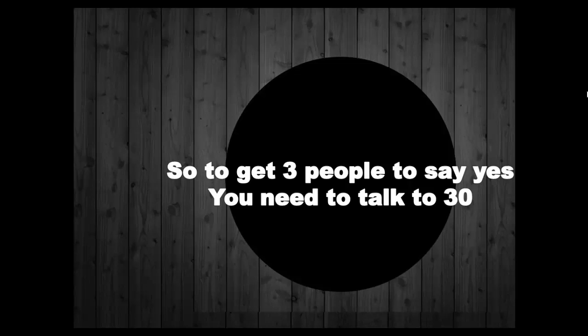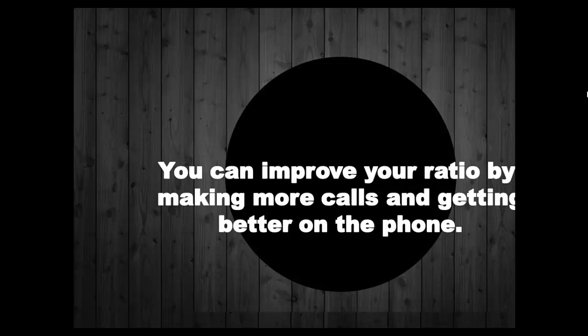Here's a secret: the more calls you make, the more it will improve your ratio. You can improve your ratio by making more calls and getting better on the phone. When you improve your ratios, it allows you to make fewer calls. People who make calls sporadically never improve their ratio — they always have to talk to 30 people to get three. But if you improve your ratio, you could talk to 30 and now get six, moving from 10% to 20% because you got better on the phone.